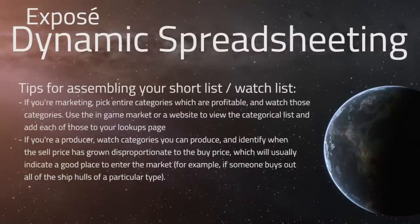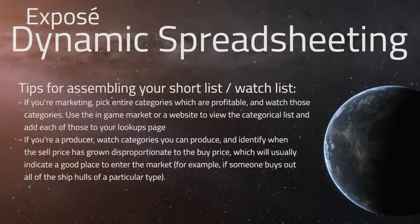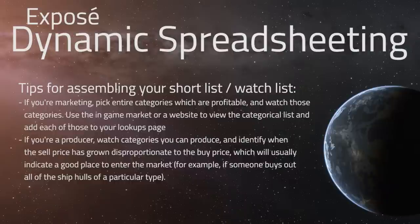What we're going to look at today — and I'll provide a link in the description for the spreadsheet — is a sheet that lets you select a particular subset of items from the total items list and get price data on those. We're creating a new-style market watch list with gradient scaling and color formatting to pop out and illustrate when a trade is profitable or a price spike has occurred.